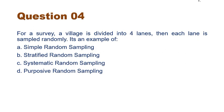Next question: for a survey, a village is divided into four lanes, then each lane is sampled randomly. Is it an example of simple random sampling, stratified random sampling, systematic random sampling, or purposive sampling? To answer this, we must understand these four sampling techniques. Simple random sampling means selecting a sample randomly from one group — for example, selecting 5 students out of a class of 50 randomly.